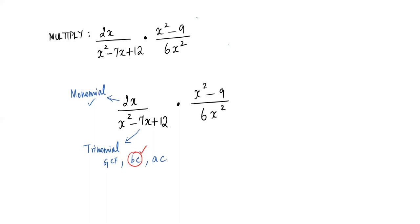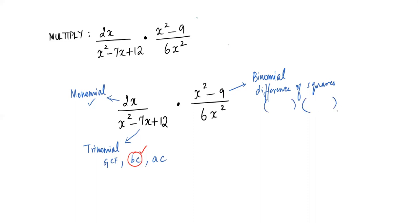For the binomial with two terms, look for a special case. Here I see a minus in between and each term is a perfect square — x² and 9 is 3² — so we'll use the difference of squares. The other monomial requires no factorizing. So the plan is: leave the monomial as is, BC method for the trinomial, and difference of squares for the binomial.